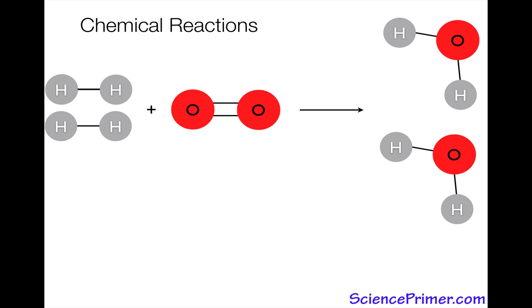So if we have 2H₂ + O₂ = 2H₂O, we have a balanced equation. And there are four hydrogen and two oxygen atoms on either side of this equation.